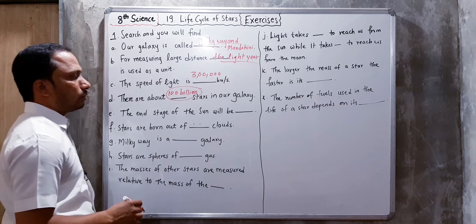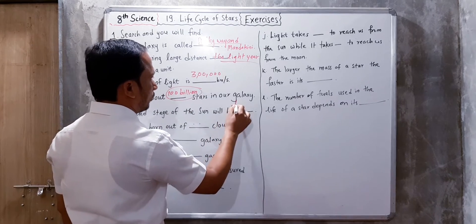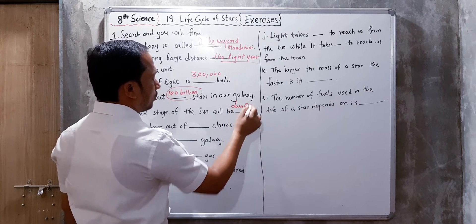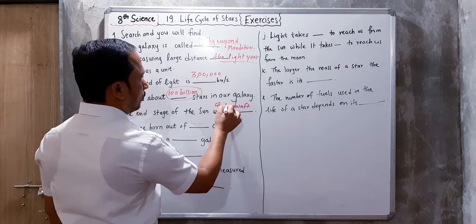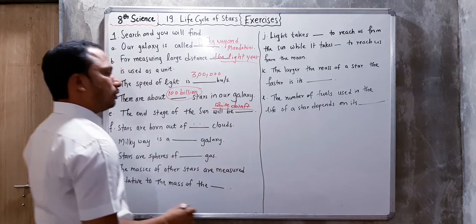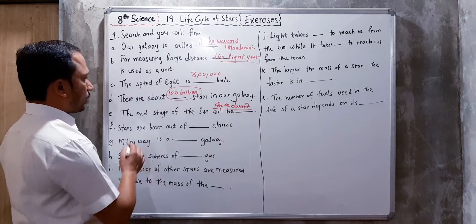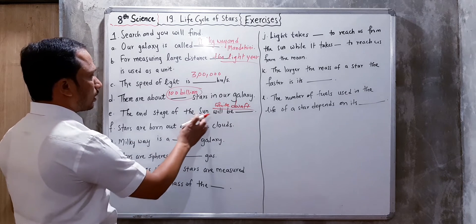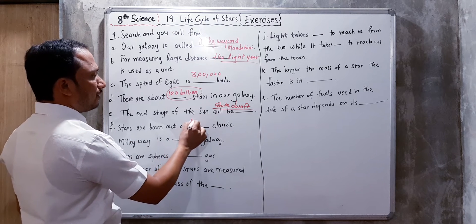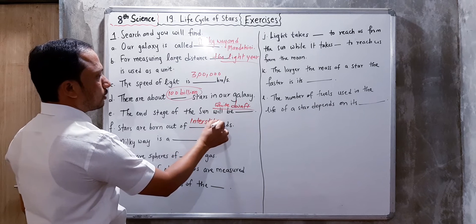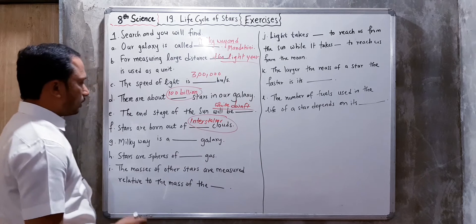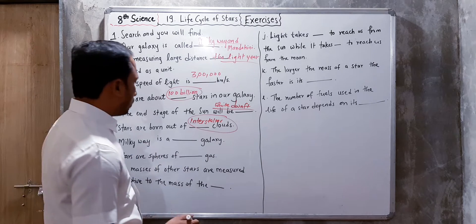The end state of the Sun will be white dwarf. White dwarf is called this because its mass is less than other stars. Stars are born out of hot gas, which are interstellar clouds.